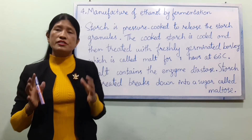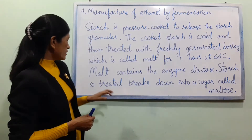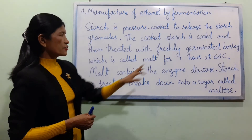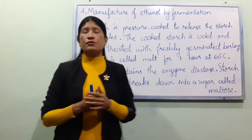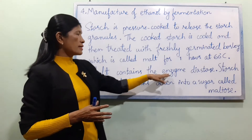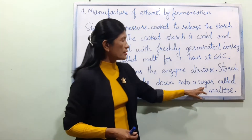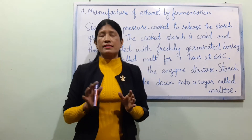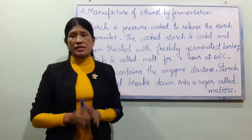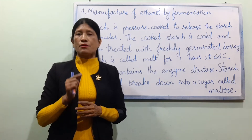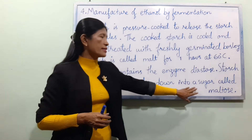Enzyme molecules break down the starch. The enzyme diastase will break down the starch. This enzyme diastase converts the starch to a product called maltose.